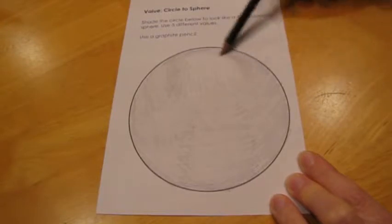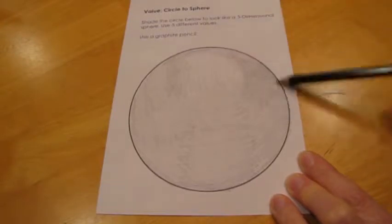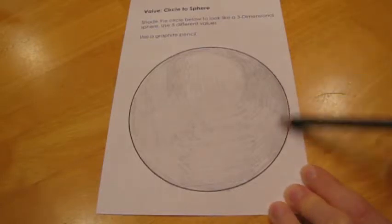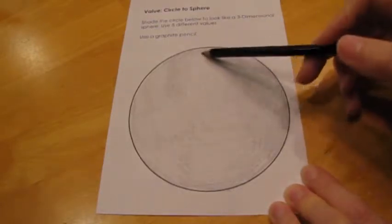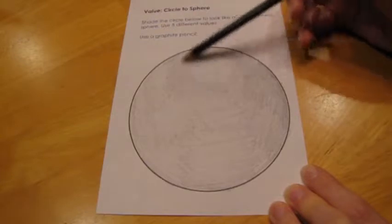The light area on the sphere faces the light source, and the darkest area would then be in the shadow. My completed examples are at the front of the room to use as a reference.